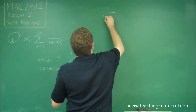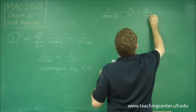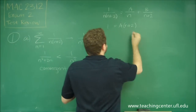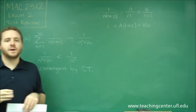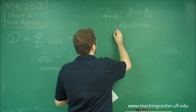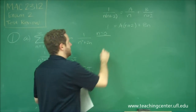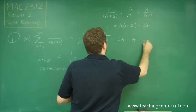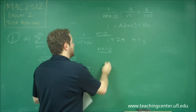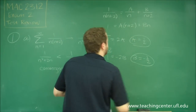What we know is that 1 over n times n plus 2 is equal to some constant A over n plus some constant B over n plus 2. Using our partial fraction formula, we know that A times n plus 2 plus B times n have to combine to be 1. You can figure out A and B by choosing appropriate values of n. If n equals 0, this term is 0, and we just get 2A equals 1, so A equals 1 half. If n equals negative 2, that makes the other term 0, and we get 1 equals negative 2B, so B equals negative 1 half.